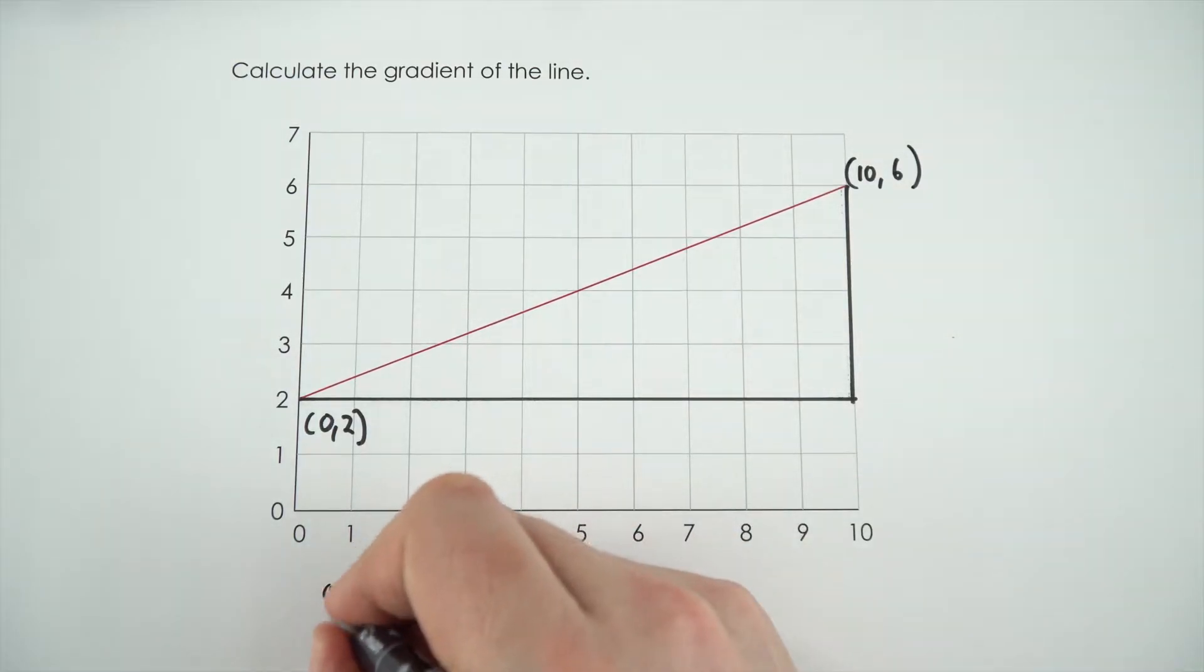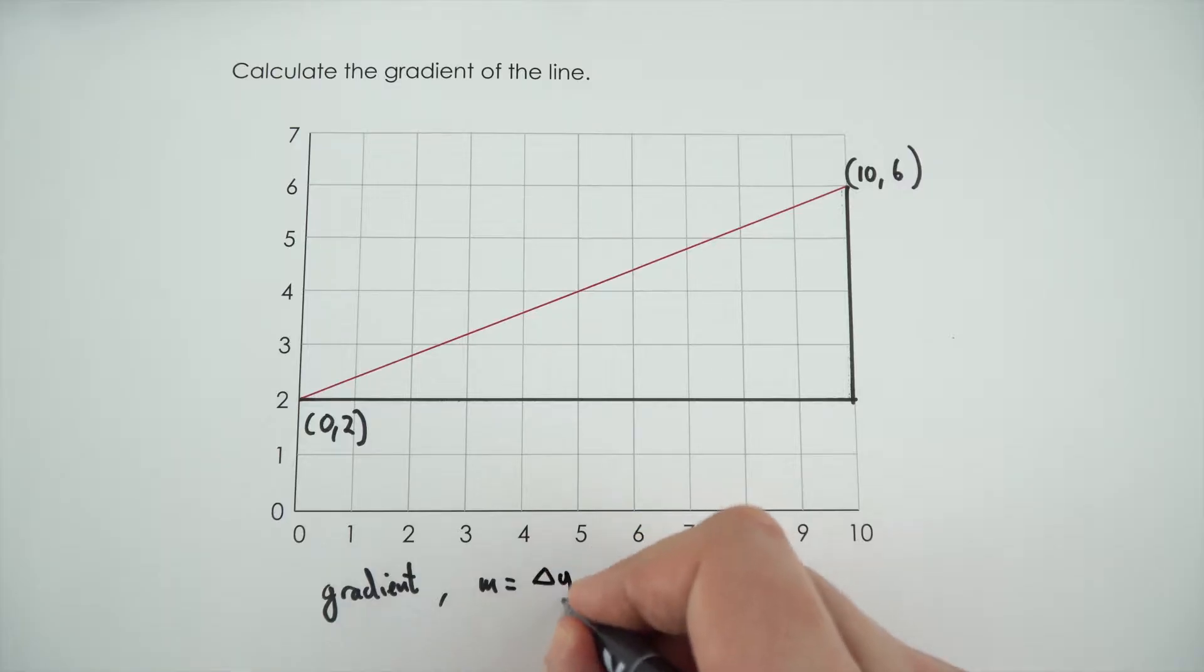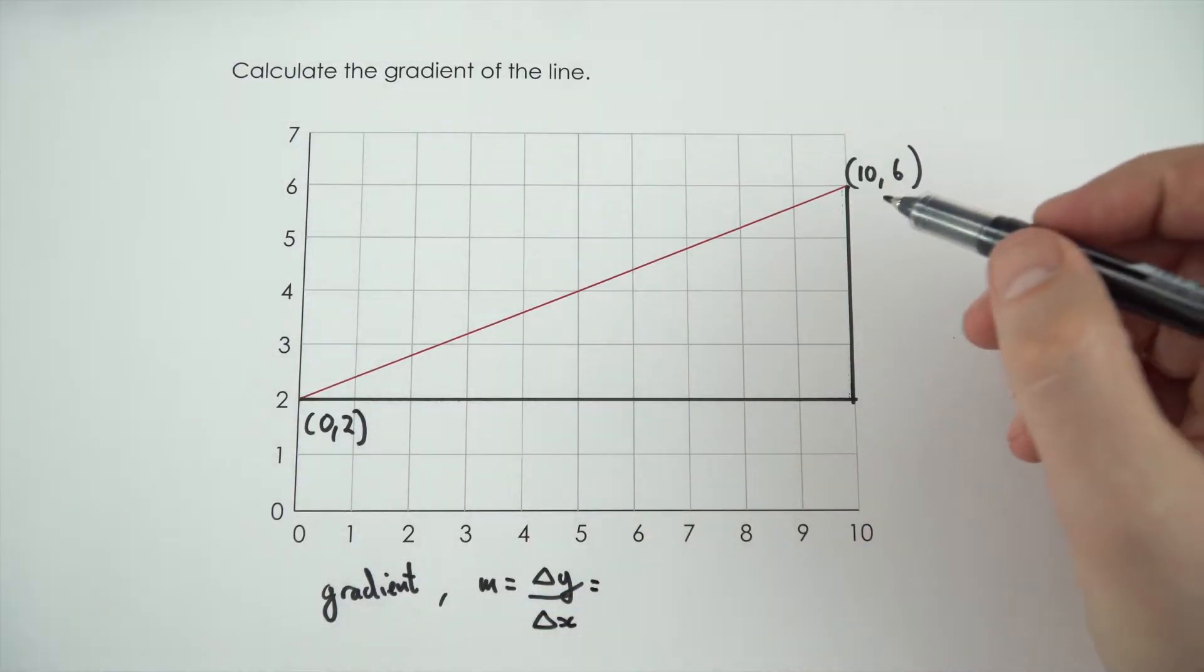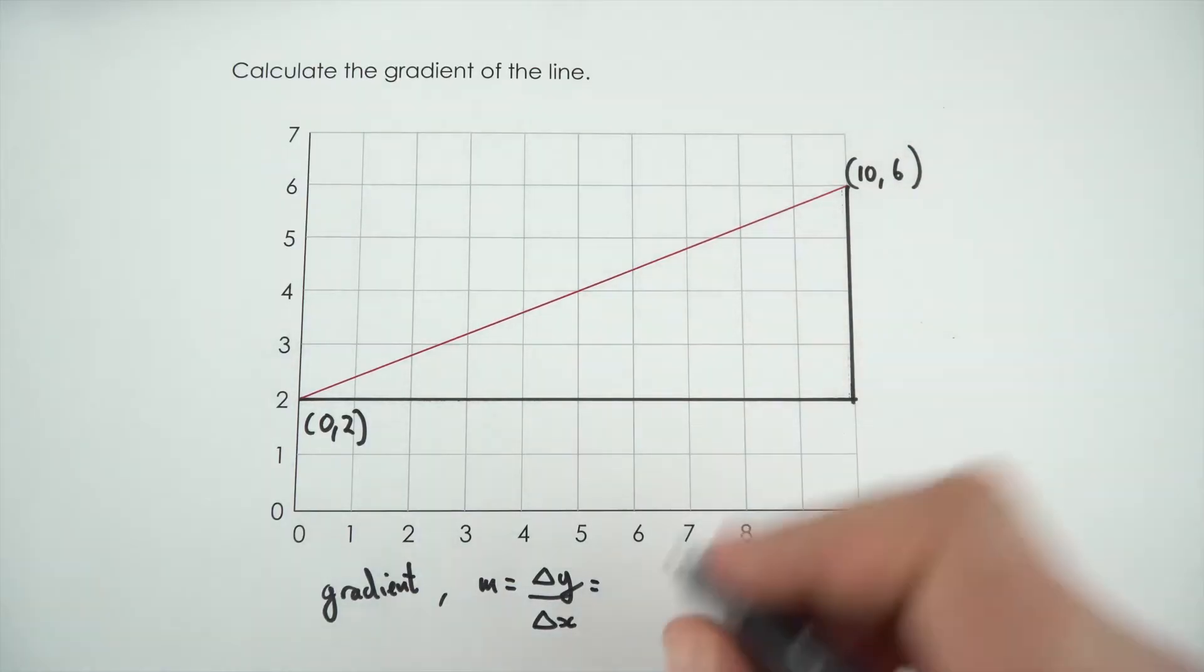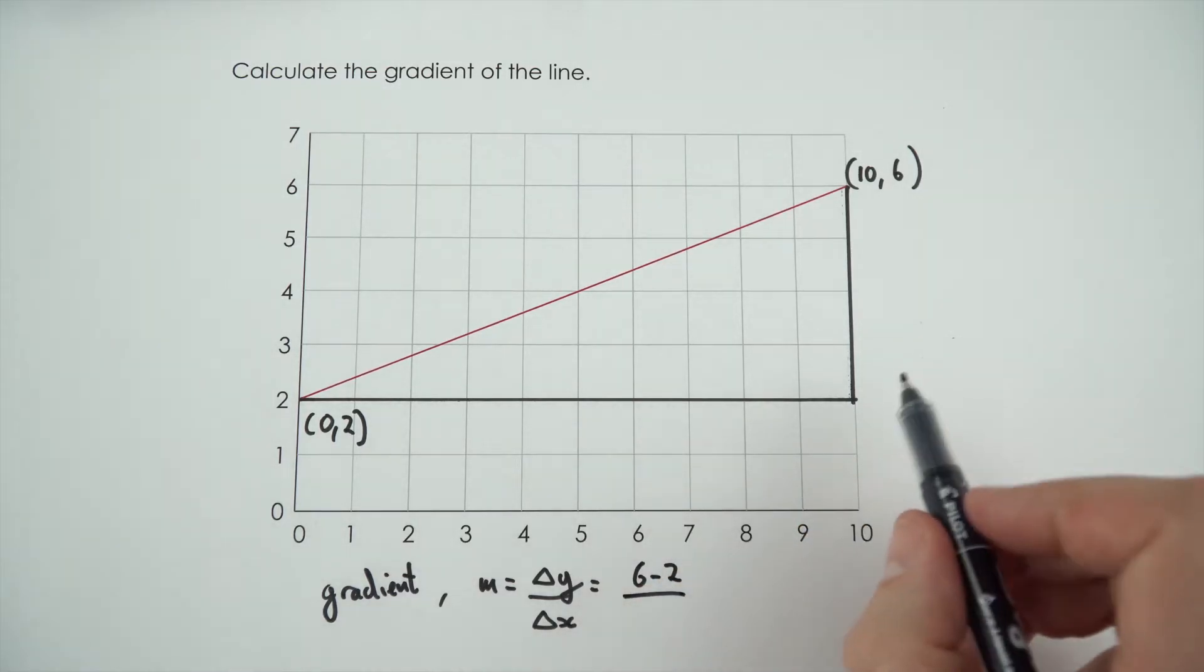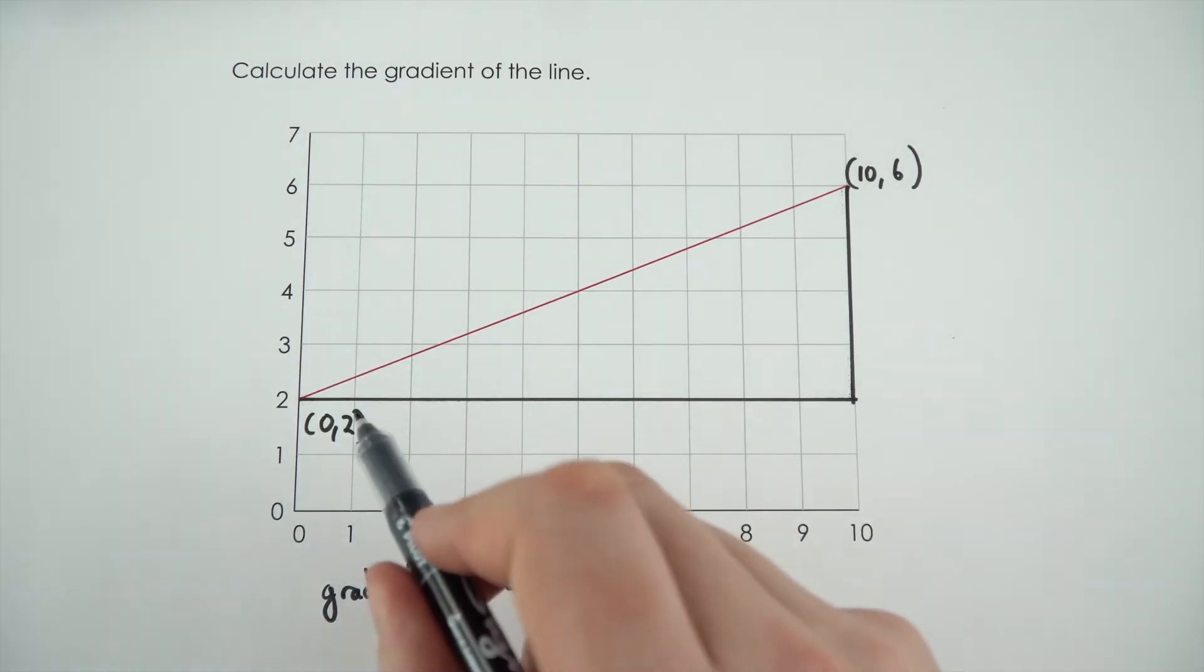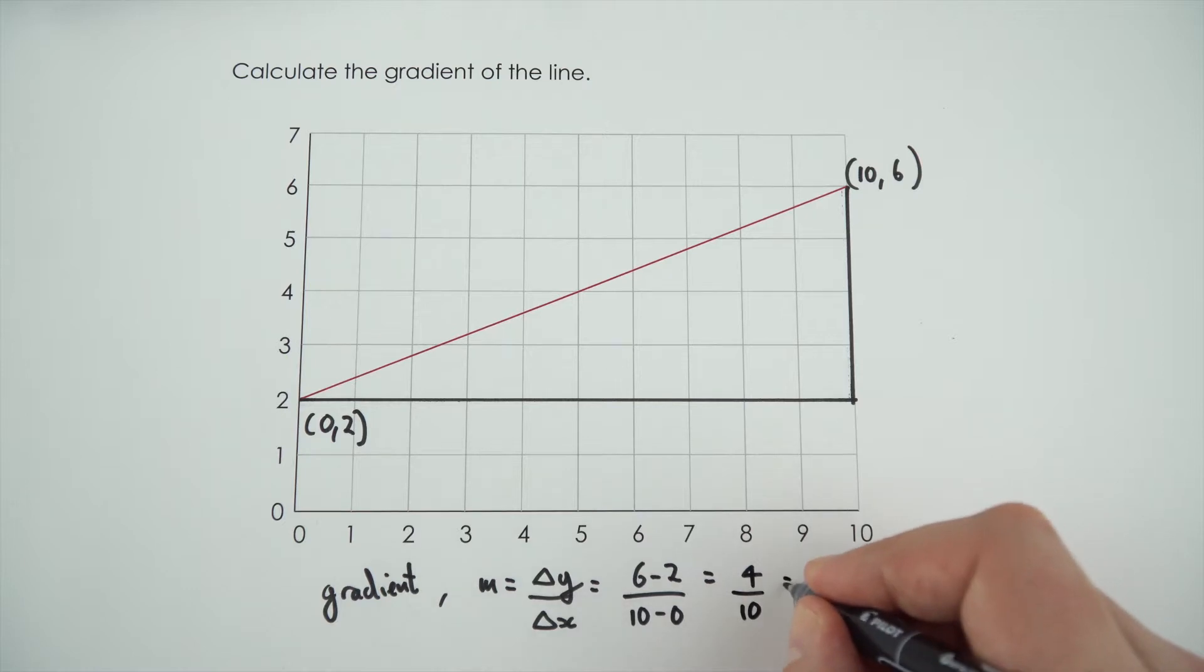Now to work out the gradient it's going to be equal to my change in y value divided by the change in x value. So the y value it starts at 6 and it drops down to 2. And I'm going to divide this by my change in x which is 10 minus 0. And that's then equal to 4 divided by 10 which is equal to 0.4.